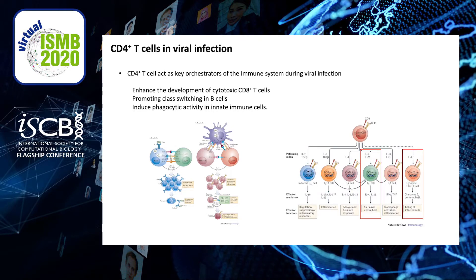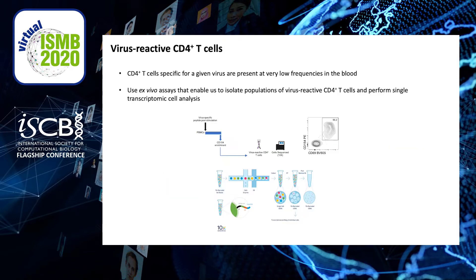To accomplish all of these different functions they can differentiate into a number of subsets, but today I'm mainly going to focus on the T follicular helper subset and the cytolytic subset, which I will come back to later. Virus-specific CD4 T cells are present in very low frequencies in the circulation and analysis has often been restricted to artificially expanded populations or limited to low resolution techniques.